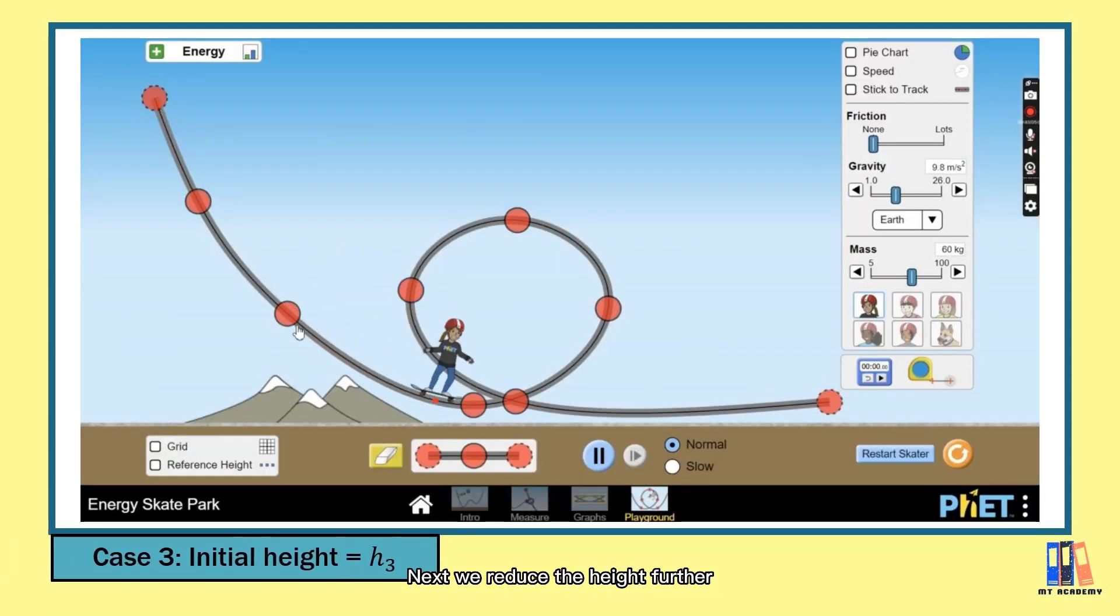Next, we will reduce the height further and you can see that the girl still couldn't make it but she is making a simple harmonic motion.